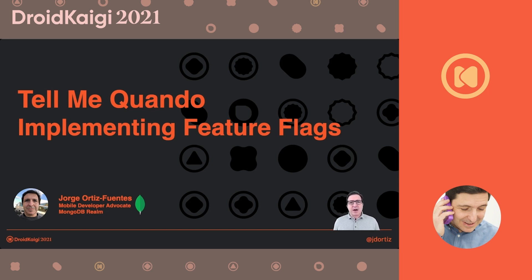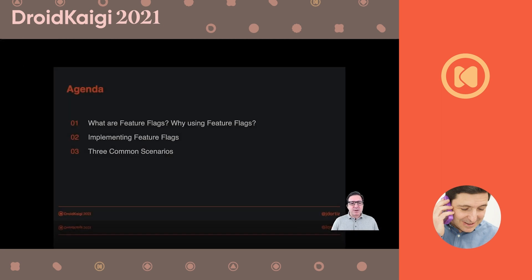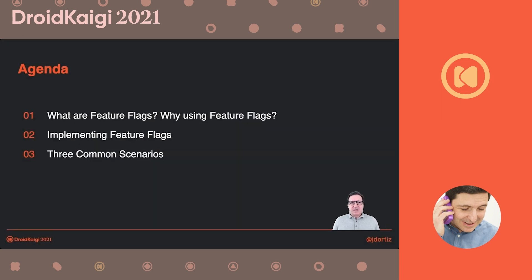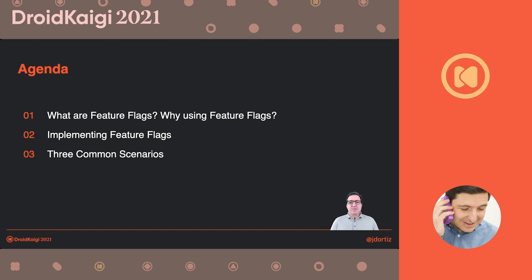Let me start with the agenda. It is very simple. I'm going to explain what feature flags are and why they might be relevant to you. Then I will move into how they get implemented in an Android project. And finally, I will mention three common scenarios that happen when you are using feature flags, and I will be doing some live coding to show you the actual implementation of one of them.